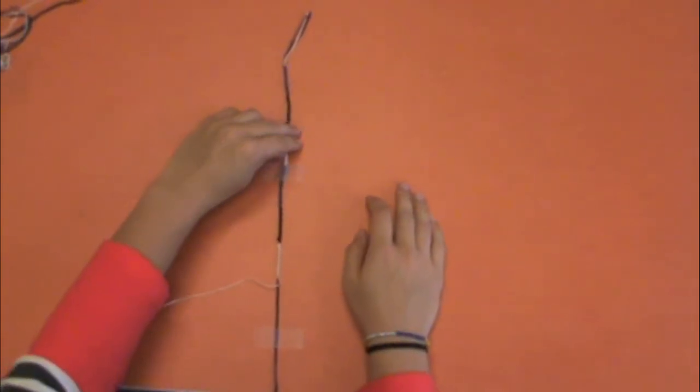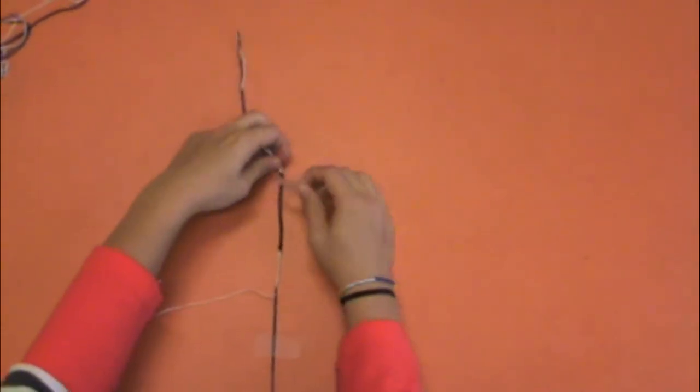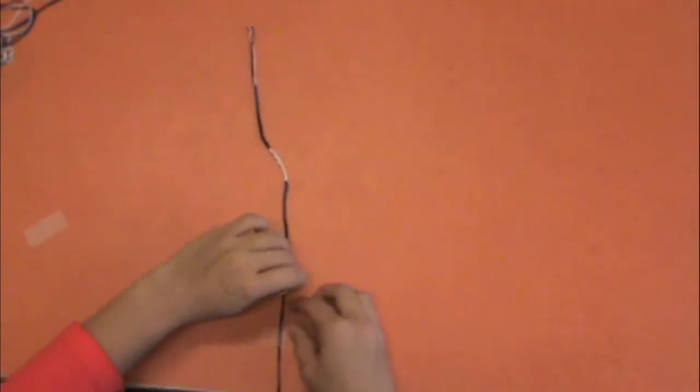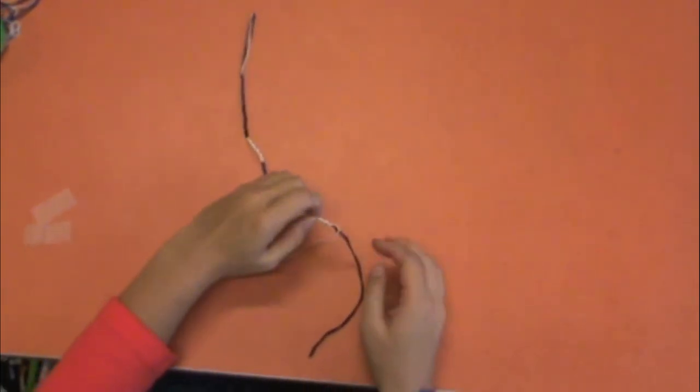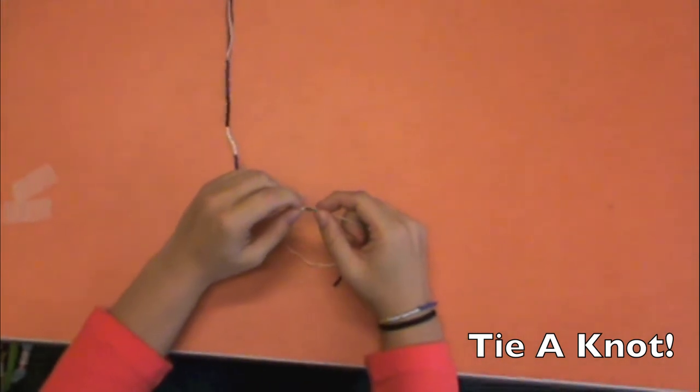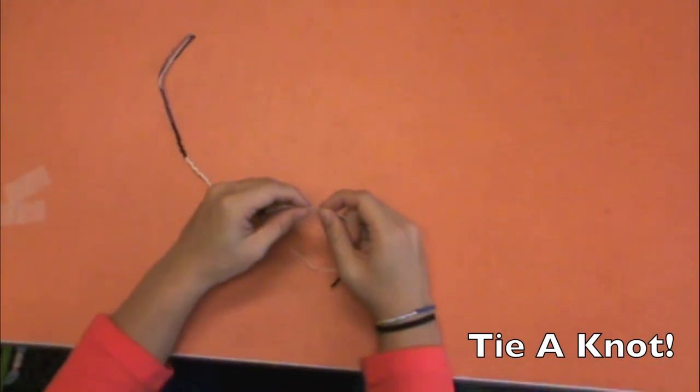Now, you're going to take the bracelet off of the table. Take the tape off the top and the bottom. Next, you're going to tie a knot at the bottom of your bracelet, just like you did at the top.